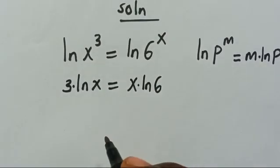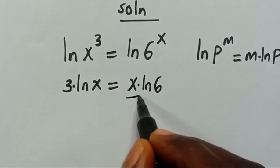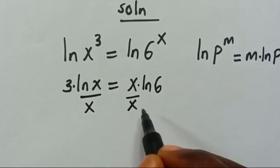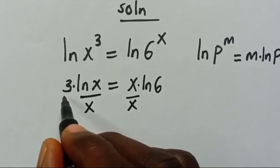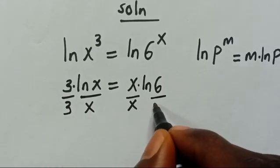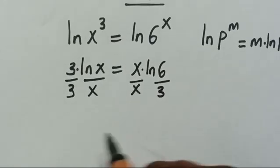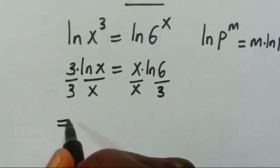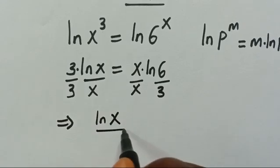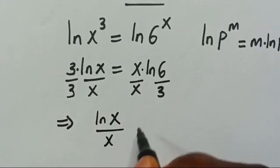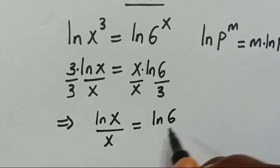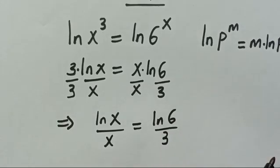From here, let's divide both sides appropriately — divide by x and divide by 3 — so we get ln(x) divided by x equals ln(6) divided by 3.